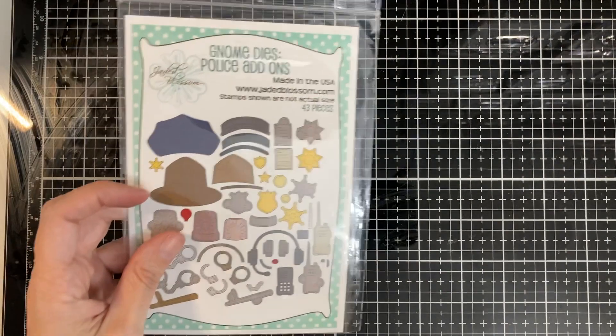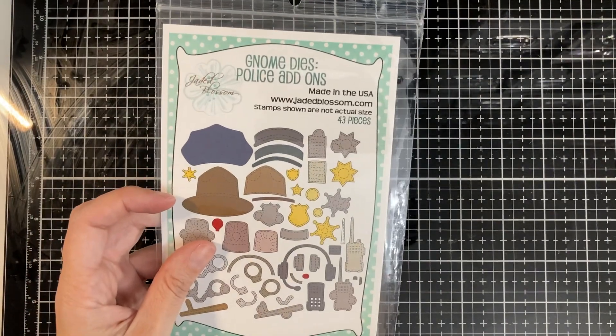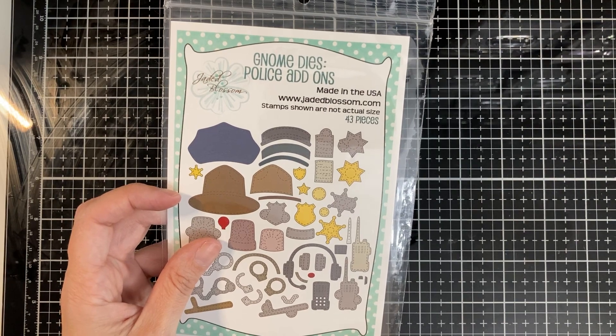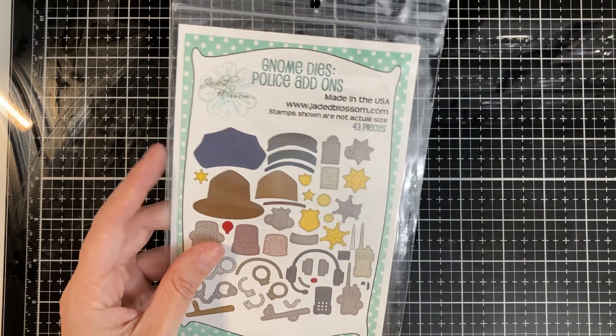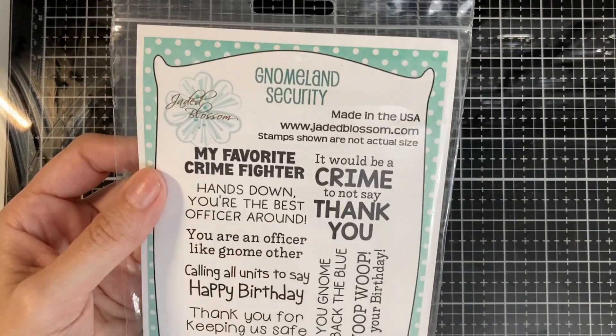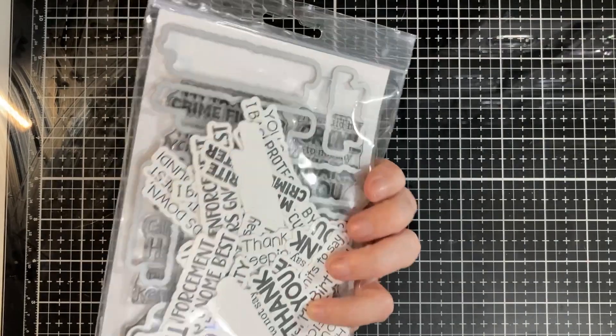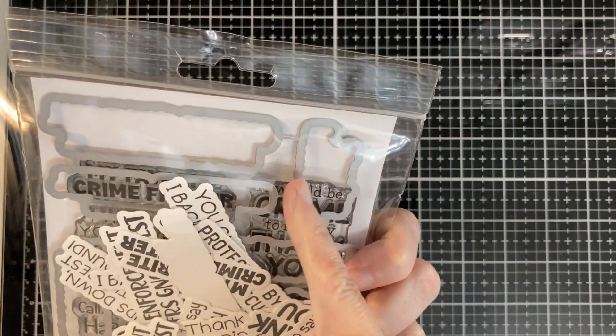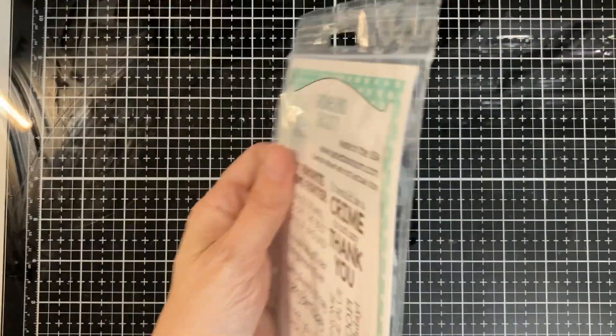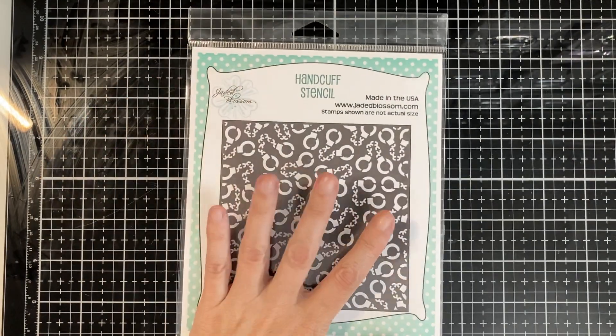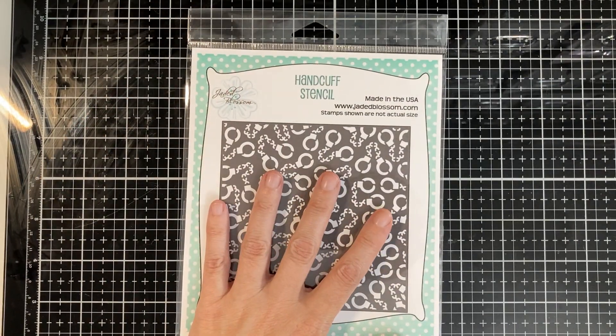Hello everyone, today I'm here for Jaded Blossom and it's a June release blog hop. Here is the gnome dies police add-on that I used for my card, the Gnome Land Security stamp set with the coordinating dies. Super fun, hope you can join us on our hop and a handcuff stencil.